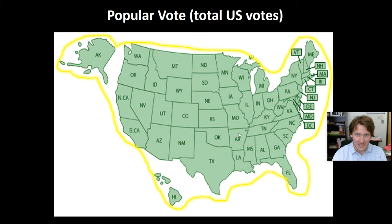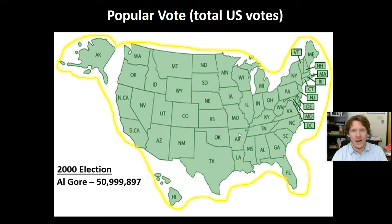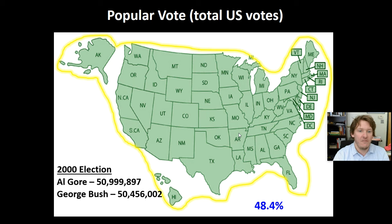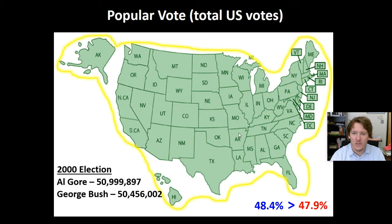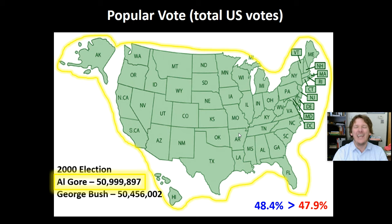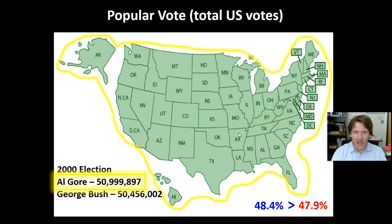There is no constitutional basis for the popular vote — it means nothing. If we look at the 2000 election and count every single vote in the United States, Al Gore, the Democratic candidate, got 50,999,897 votes — 48.4% of the votes. George Bush got 50,456,002 votes — 47.9%. Basic math tells you 48.4% is more than 47.9%. Al Gore received more votes and won the popular vote, but he did not become president because the popular vote is meaningless. The Electoral College elects the president — the Constitution explains that, not the popular vote.